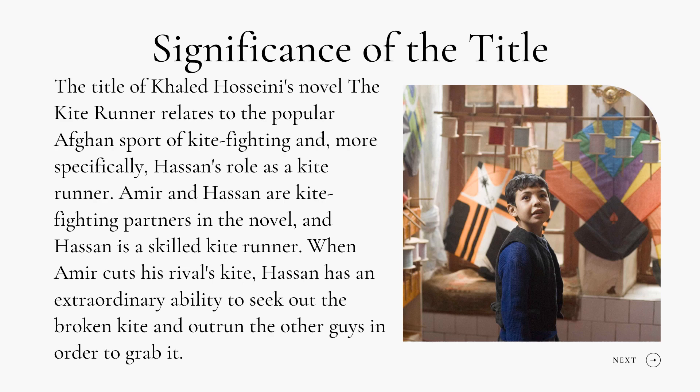Significance of the title: The title of Khaled Hosseini's novel, The Kite Runner, relates to the popular sport of kite-fighting and more specifically, Hassan's role as a kite-runner. Amir and Hassan are kite-fighting partners in the novel, and Hassan is a skilled kite-runner who has an extraordinary ability to seek out the broken kite and outrun the other boys to grab it. The title signifies a pivotal event in both Amir and Hassan's lives — the day of Kabul's annual kite-flying tournament — and references Hassan's function as Amir's companion, implying that Hassan is central to the plot.